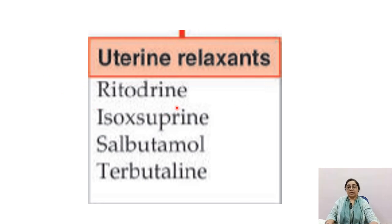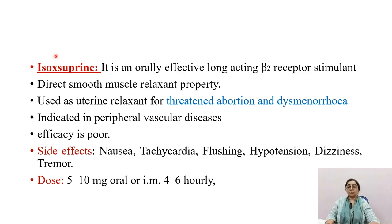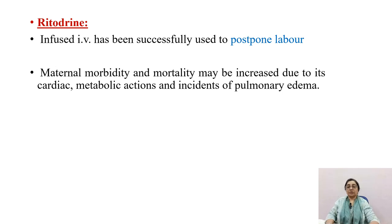Uterine relaxants: ritodrine, isoxsuprine, salbutamol, and terbutaline cause relaxation of uterine muscle. Isoxsuprine is orally effective, long-acting beta-2 stimulant with direct smooth muscle relaxing properties and is used as a uterine relaxant in threatened abortion and dysmenorrhea; also indicated in peripheral vascular disease. Dose: 5–10 mg orally or intramuscularly every 4–6 hours. Ritodrine can be given by IV infusion. However, maternal morbidity and mortality may be increased due to its cardiac and metabolic actions, including the risk of pulmonary edema.